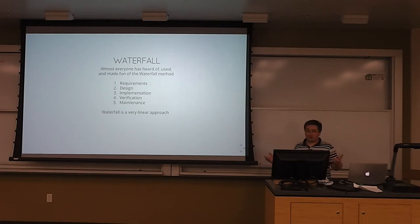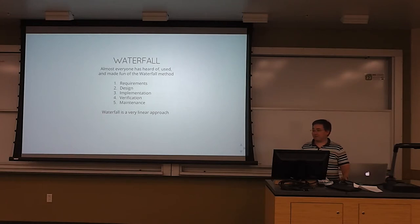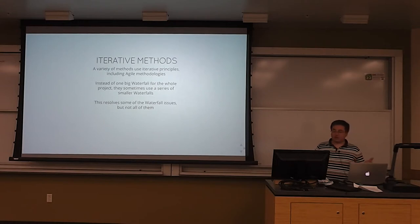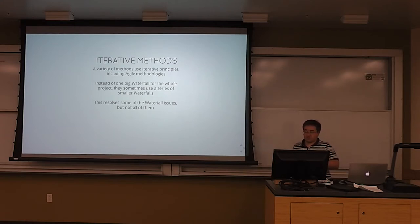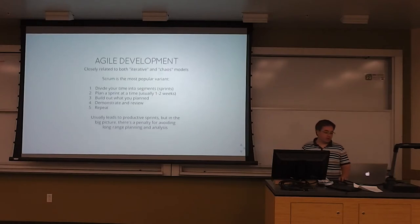Everyone heard of waterfall? Basically you figure out the requirements, you do the design, you implement it, you verify it, and then you go into maintenance mode. It's very linear. There are some obvious downfalls to that — if you do any one of those wrong, there's no accommodation for going back and fixing it. That gave rise to iterative methods that do go back and revisit earlier stages. Agile is a form of an iterative method.